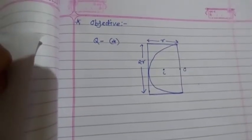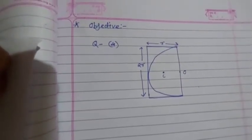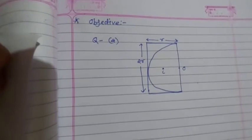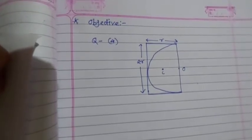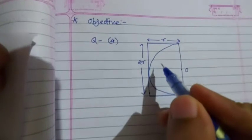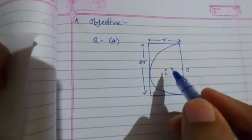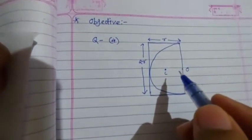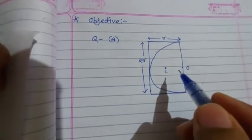This is question number four of objective of assignment one. Here it is said that a semicircular portion of radius r is cut from uniform rectangular plate as shown in the figure. The distance of center of mass of remaining plate from point O is to be found.